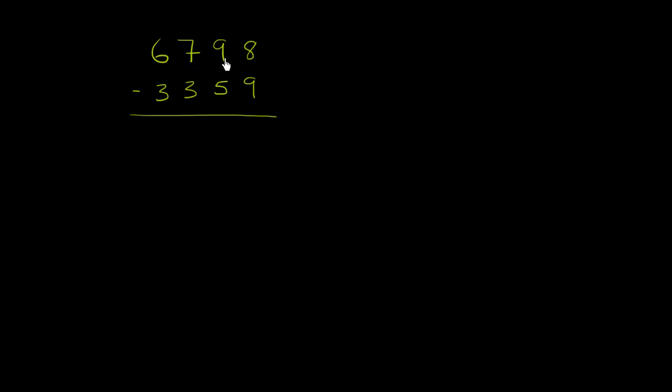We've got 6,798 minus 3,359. So let's see how far we can get with the subtraction. Immediately when we go into the ones place, we're going to try to subtract a 9 from an 8. So we immediately reach a little bit of a stumbling block.